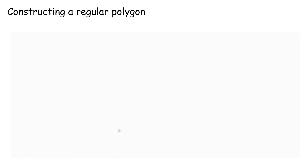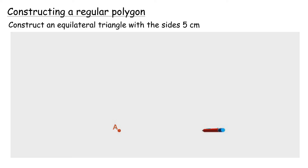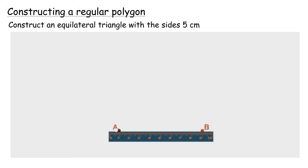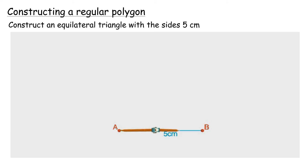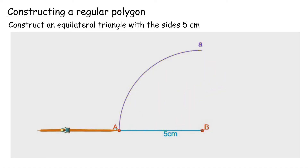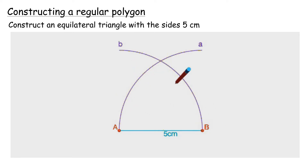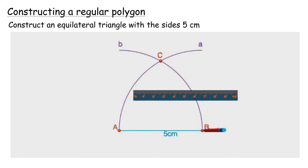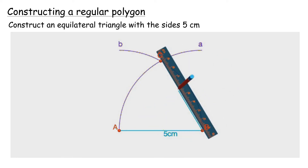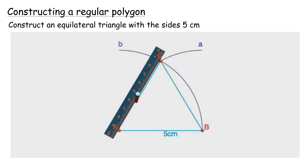Constructing a regular polygon using geometry tools. Construct an equilateral triangle with sides 5 cm. A. Construct a line segment AB with length 5 cm. B. Construct a curve with radius 5 cm from A. C. Construct a curve with radius 5 cm from point B so that it intersects with the first curve. The intersection point is labeled C. D. Draw a line from A to C and from B to C. An equilateral triangle is created.